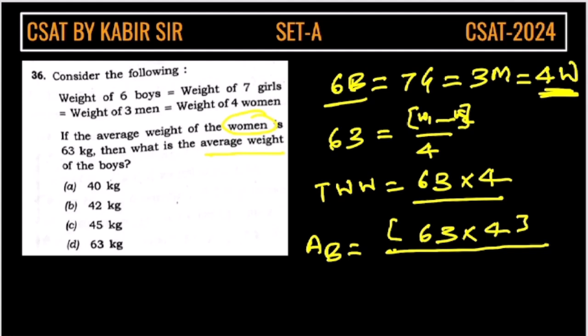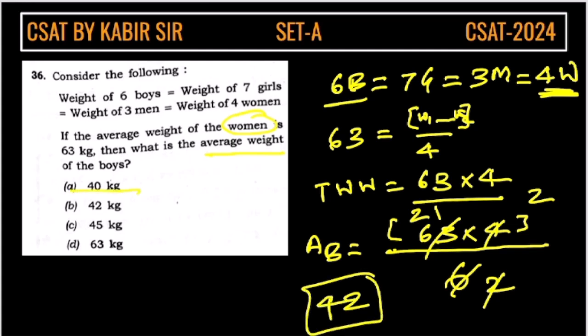So now we will solve this. From 3 we can cut this 2 times, this is 21. 2 will cut this, so this is 2, this is 4. So the average weight is 42, so the answer is option B.